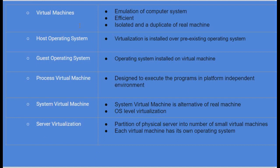A virtual machine is an emulation of a computer system. It is a very efficient, isolated, and duplicate of a real machine. Virtualization is installed on a pre-existing operating system called the host operating system. The operating system of the installed virtual machine is called the guest operating system. A process virtual machine is designed to execute programs in a platform-independent environment.